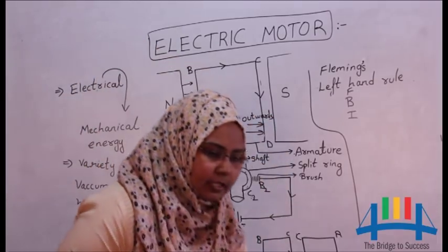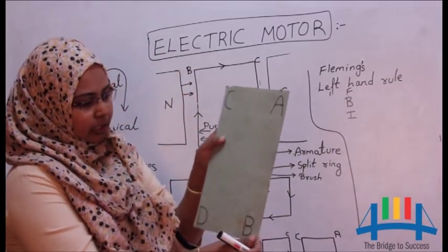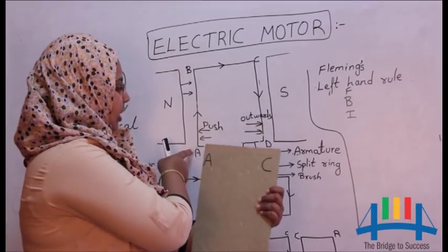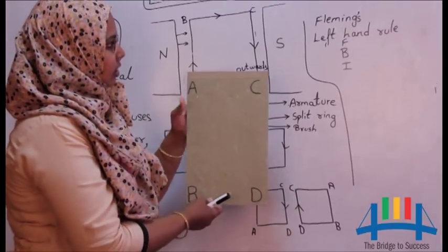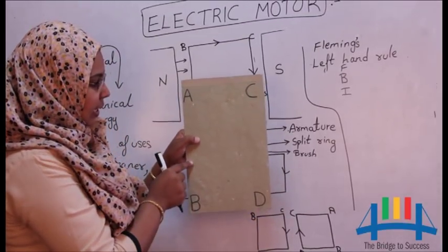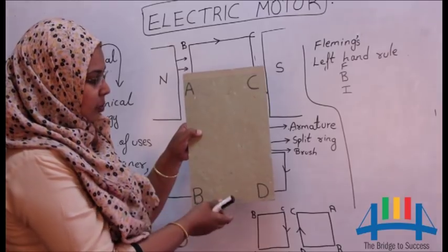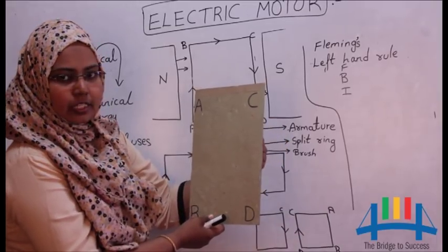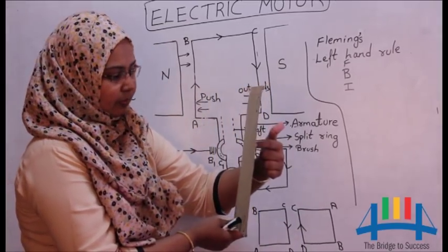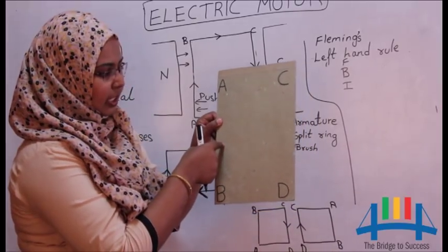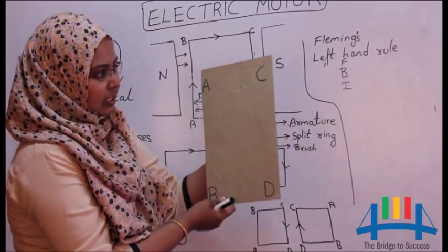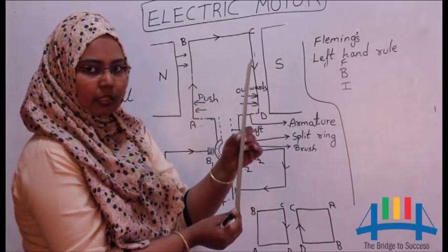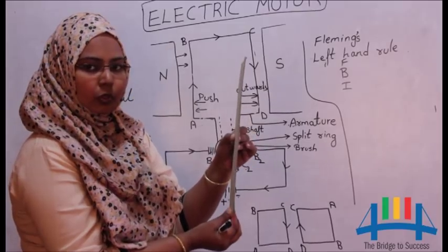If you consider this as an armature, AB is pointing towards me and CD is to the other side. Magnetic force on AB is pushing the armature inside. From other side, the CD is getting pushed outwards. So one side, the force is pushing the arm inside. And from the other side, the force is pushing the armature outside. So because of this, the armature completed one-fourth of its rotation.